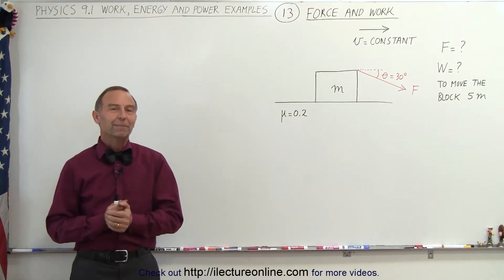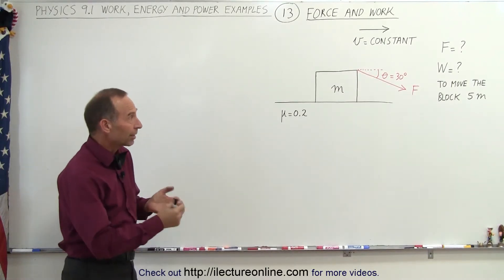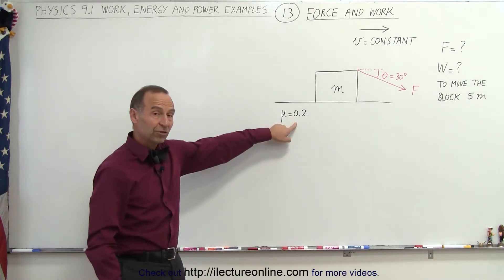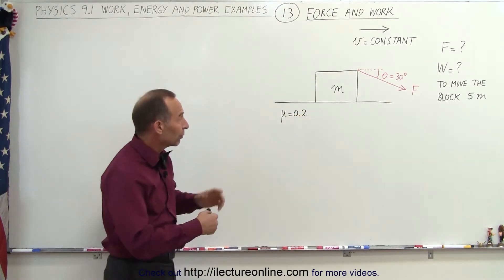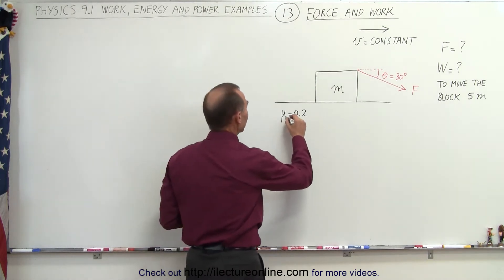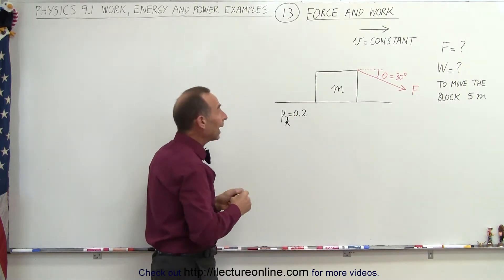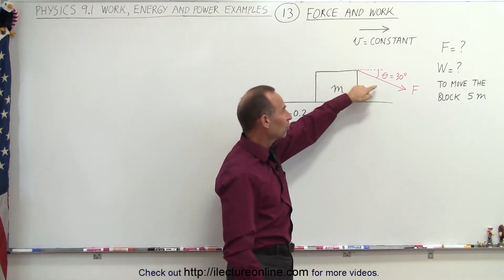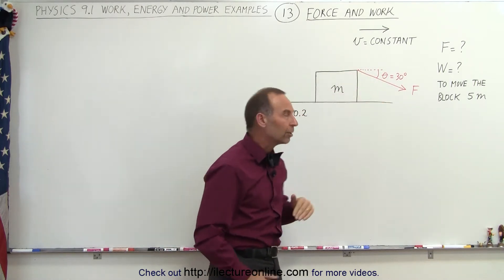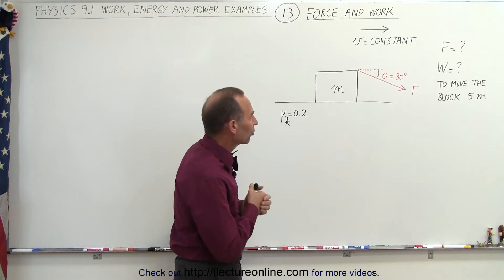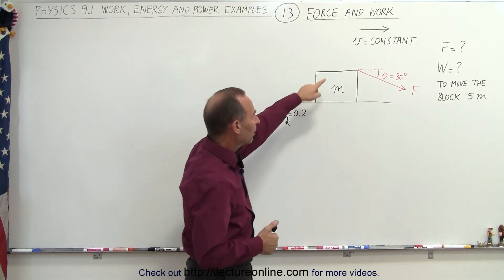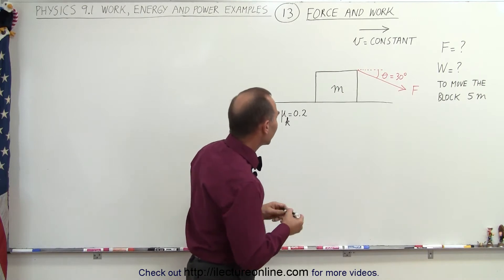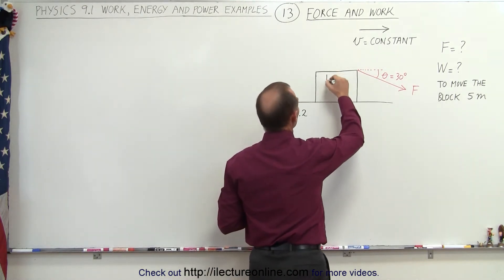Welcome to iLectroOnline. In this example, we have a block that's being dragged across the floor. There's a coefficient of friction between the block and the floor — we assume this is the kinetic coefficient of friction. The force is applied in the same direction as the motion at an angle of 30 degrees relative to the horizontal. We're assuming the block is moving at a constant velocity, and the mass of the block is 10 kilograms.